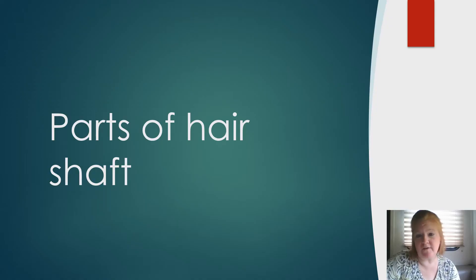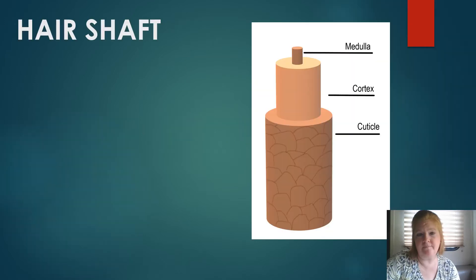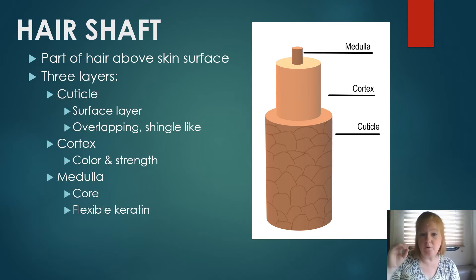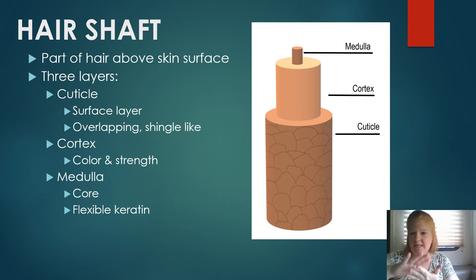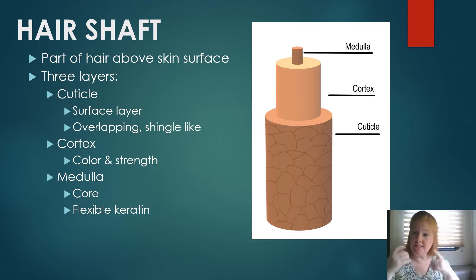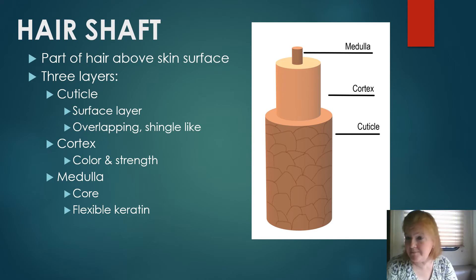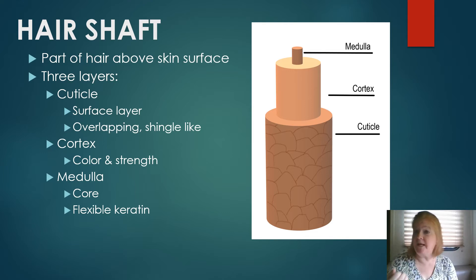The hair shaft is the part of the hair that comes above the skin's surface and has three layers: cuticle, cortex, and medulla. Starting from the outside going in — the cuticle is the surface layer, with overlapping shingle-like cells, and it provides protection. The cortex is the next inner layer; it contains the hair's color and adds most of its strength. The medulla is the core, sometimes missing in light-colored hair, and is made of flexible keratin that adds flexibility to the hair.